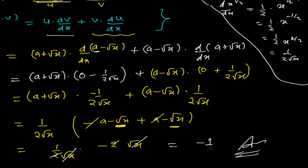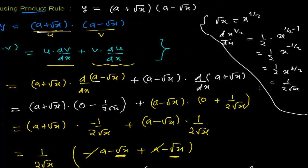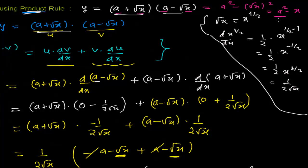As I had said earlier, we got the derivative as −1. I solved it with this lengthy product rule. But sometimes the product rule becomes very simple too. Since the question required product rule, we used it. But you could also use the identity: (a + √x)(a − √x) = a² − (√x)² = a² − x. Then the derivative of a² is 0 and the derivative of x is 1, so you get −1 in just three steps using the power rule.